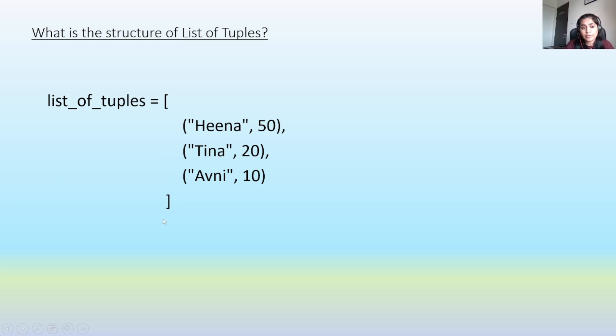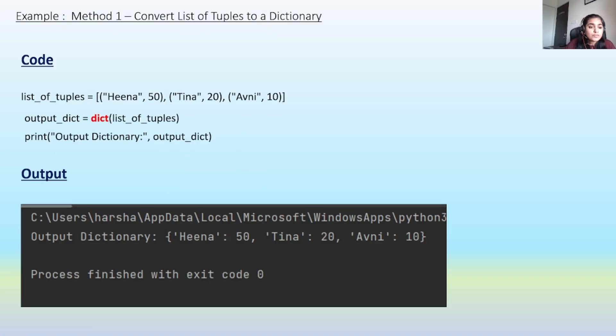Now let's have a look at the conversion part. Here we have the first code. In this, first we have initialized a list of tuples, and then using the dict method we are converting the list of tuples into an output dictionary.